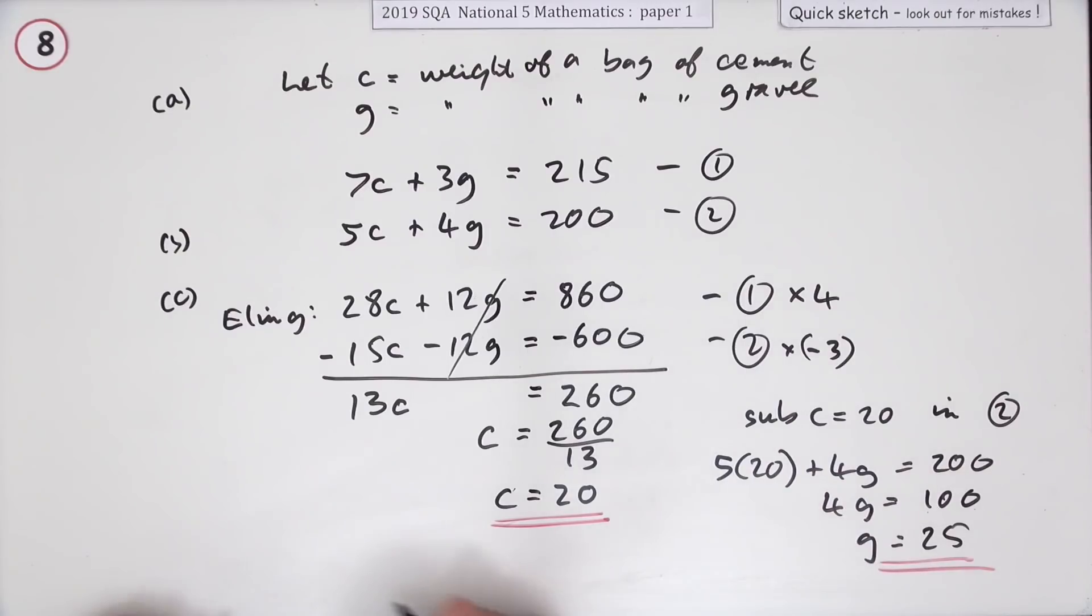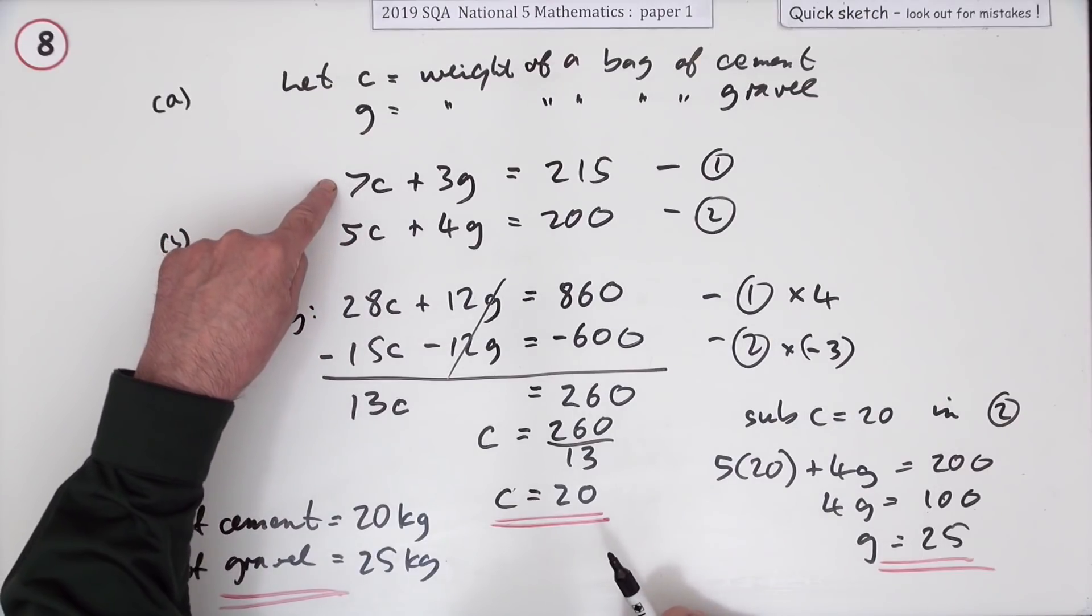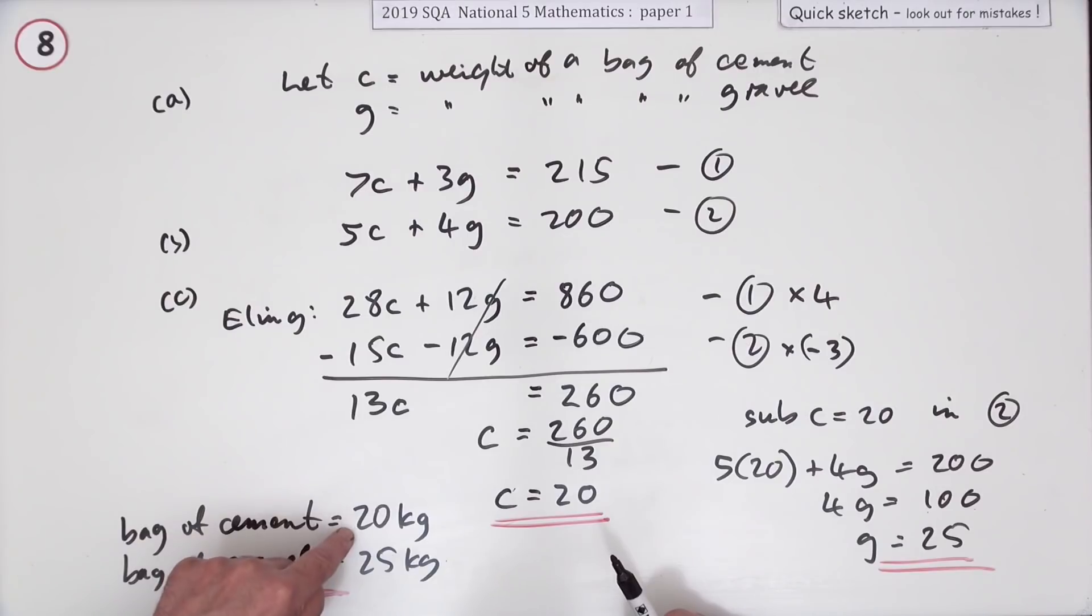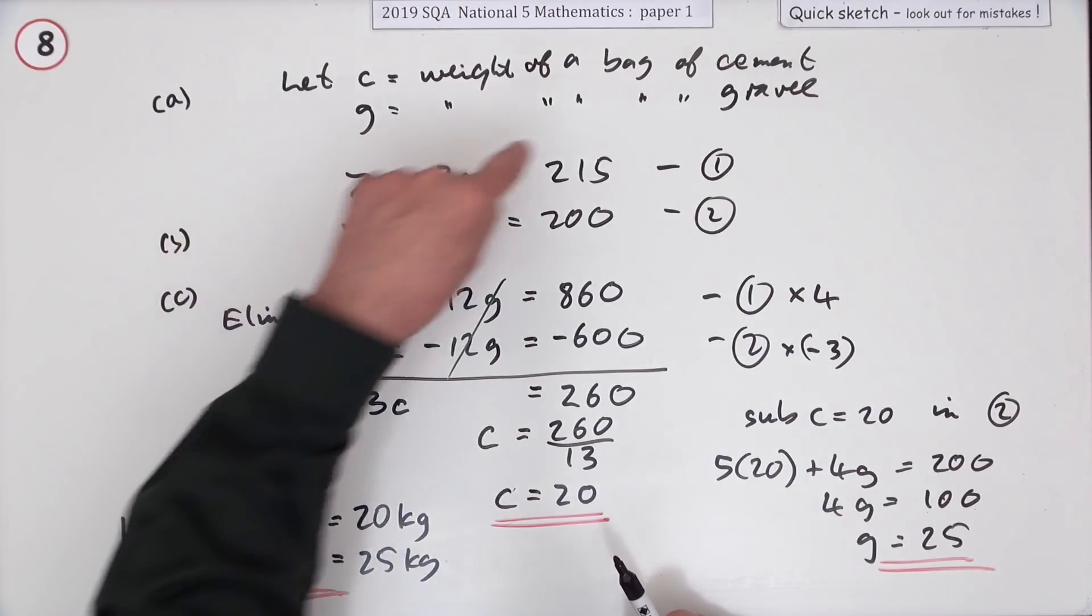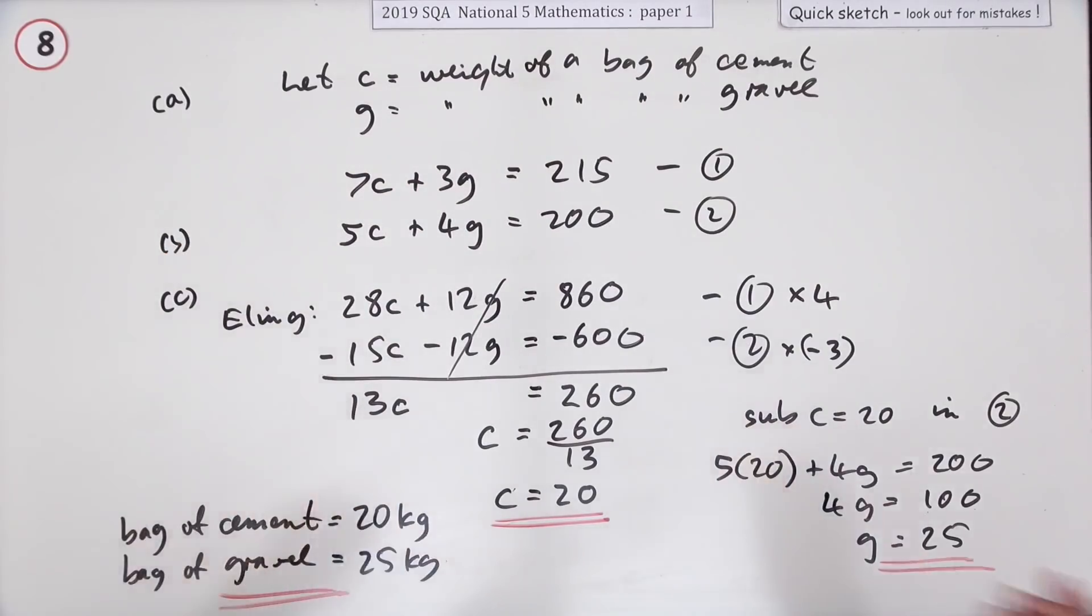Finish it off by saying bag of cement is 20 kilograms, bag of gravel is 25 kilograms. Of course you should also really check it. If you use number two, check it with that first one just to make sure it all works out. You would have 140 and 75 which does make 215, so you know you've got it correct.